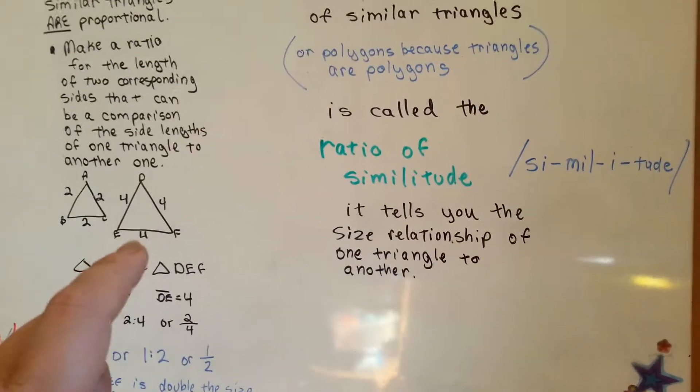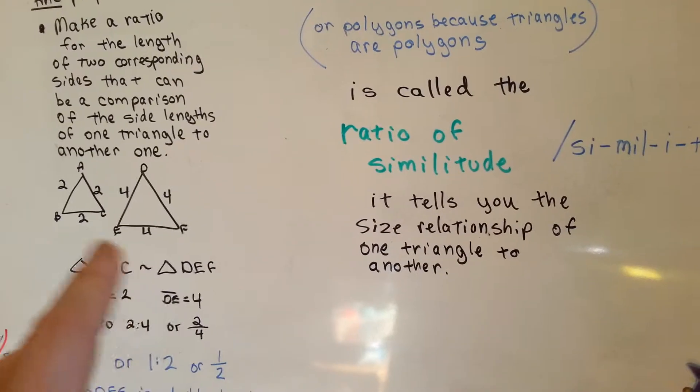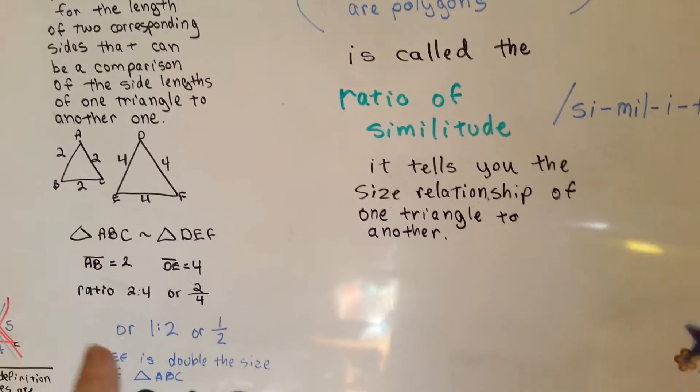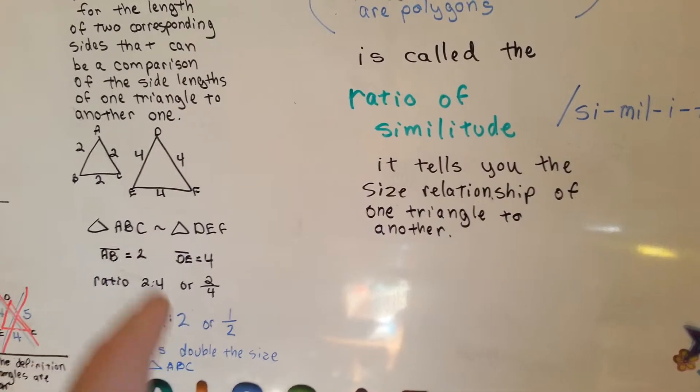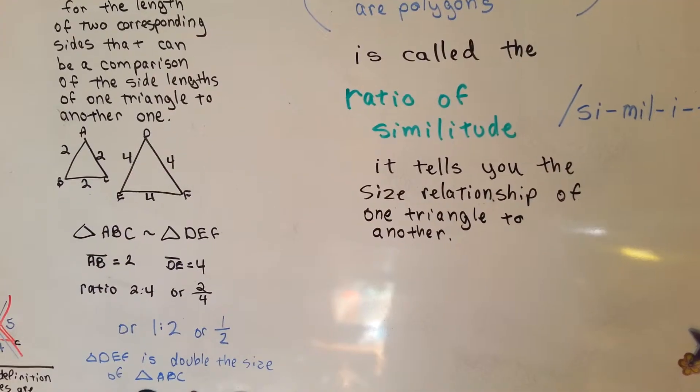It tells you the size relationship of one triangle to another. So, you could say, excuse me, what's the ratio of similitude for these? And you'd say, oh, you know, it's 1 to 2. This one's double that one. That's the ratio of similitude.